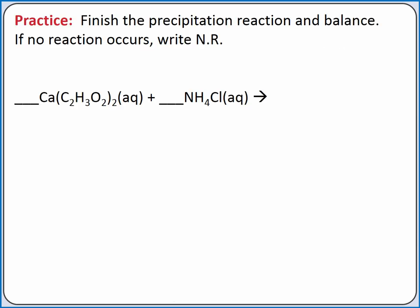Let's practice writing equations for precipitation reactions. In this example, we're adding together calcium acetate and ammonium chloride. First, we'll have our ions switch partners to see what compounds are formed. We can form calcium chloride and ammonium acetate. Next, we need to evaluate if either of these ionic compounds is insoluble. According to our solubility rules, both of these compounds are soluble. Chloride salts are normally soluble, and calcium is not an exception. All ammonium salts and acetate salts are soluble, so ammonium acetate is also soluble. Since we produce two soluble ionic compounds, no reaction occurs and all ions remain in solution.